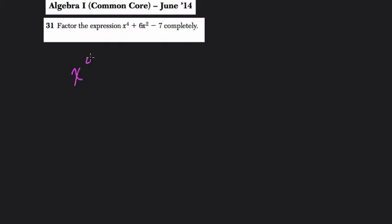They give us x to the fourth plus 6x squared minus 7, and they want us to factor it. So the first thing I would do is recognize that if we're going to be able to factor it, it's going to form two binomials. I need the first term in those binomials to be x squared, because when I redistribute to get back to our original expression, we'll have to multiply x squared by x squared, and that will give us x to the fourth.